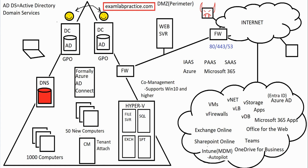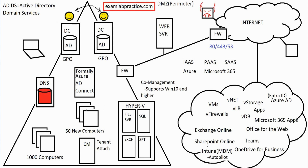Those are the fundamental things I wanted to get across in this video. First, Autopilot — which allows Intune to re-provision machines instead of re-image them. Second, Tenant Attach with Config Manager — which links your Config Manager into your Microsoft 365 tenant. And finally, the concept of co-management. Hopefully you now have a much better understanding of those topics.